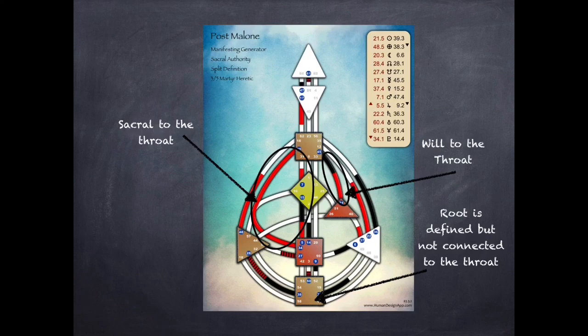So if we look at another chart, this is a chart of Post Malone. Now if you notice, he has three defined motors, another powerful chart, and two of which get to the throat. So that's will energy, and also sacral energy. So once again, someone who has a lot of energy to create things in the real world. And we've seen that with him as well.